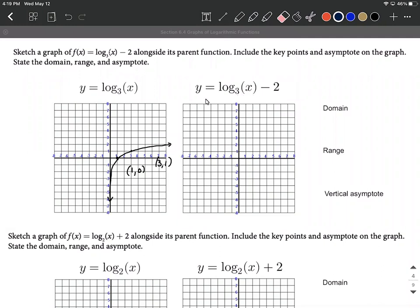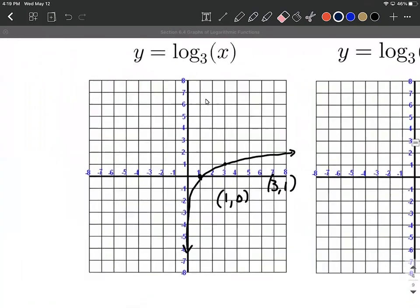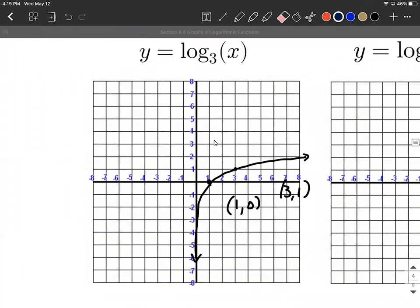What I would start with is I would graph log base 3 of x. As you can see, I already did that over on the left hand side. We picked out our key points of 1,0 and then the base comma 1. So in our case 3,1.